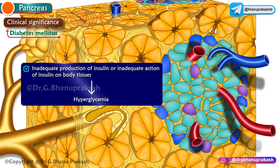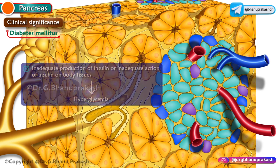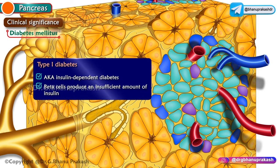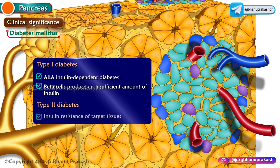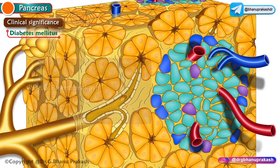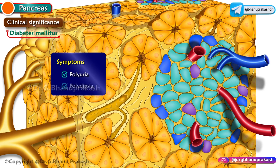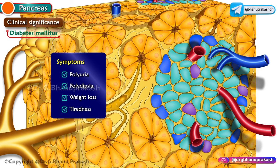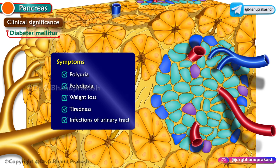Diabetes mellitus is characterized by hyperglycemia caused by inadequate production or inadequate action of insulin on body tissues. Type 1 diabetes is insulin-dependent diabetes mellitus. Type 2 diabetes results from insulin resistance of target tissues, where the body fails to properly utilize or respond to insulin. Signs and symptoms include polyuria, polydipsia, excessive weight loss, fatigue, lethargy, increased susceptibility to infections particularly urinary tract infections, and blurring of vision due to involvement of metabolites in cataract formation.